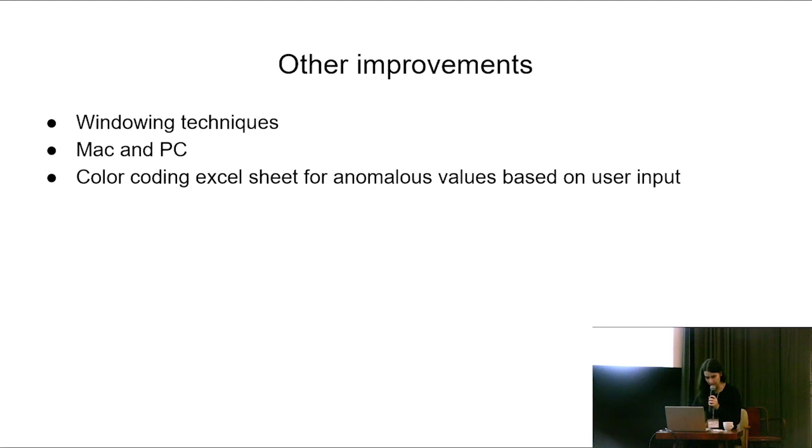Other improvements, because I'm being super DIY with my spectral analysis not using FFmpeg, I'm realizing I should be using windowing techniques. I want to get this to work on Mac and PC. I developed this on PC, and I have a Mac at home, and I made some minor edits, and it can run on Mac as well. And also I want to integrate some color coding for the Excel sheet for anomalous values based on user input. So for example, NYPR consulted with its engineers to establish an alignment level of negative 18 dBFS and several ranges of tolerance based on frequency.